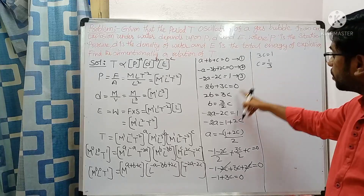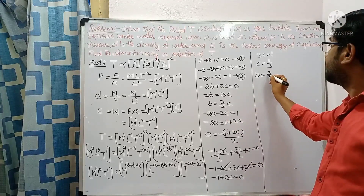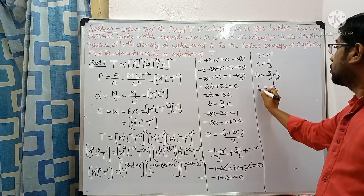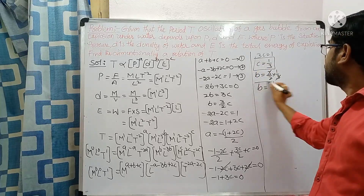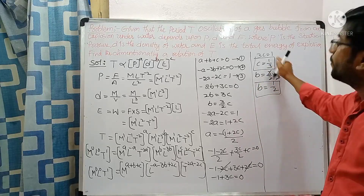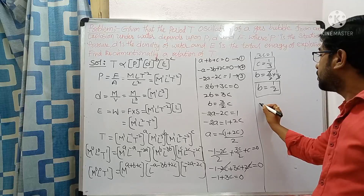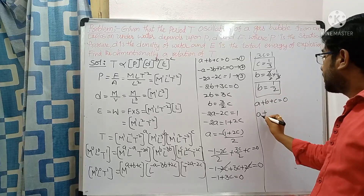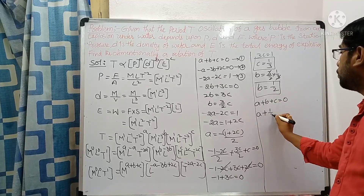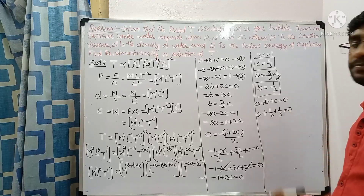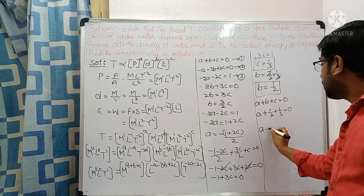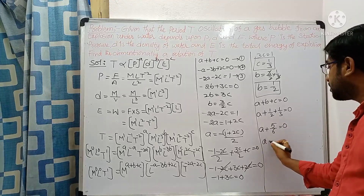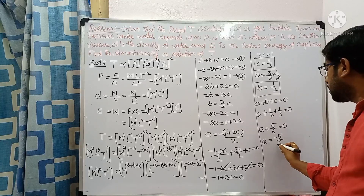With c equals 1/3, substitute into b: b equals 3/2 into 1/3, so 3 and 3 cancel giving b equals 1/2. Now substitute b equals 1/2 and c equals 1/3 into equation 1: a plus 1/2 plus 1/3 equals 0. The LCM gives a plus 5/6 equals 0, so a equals minus 5/6.